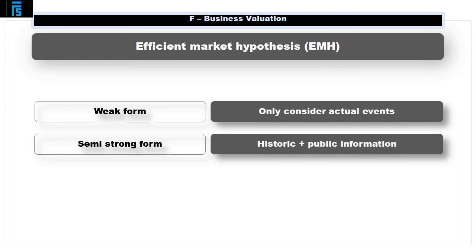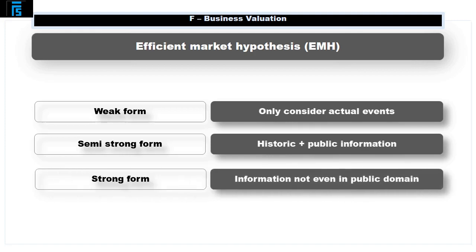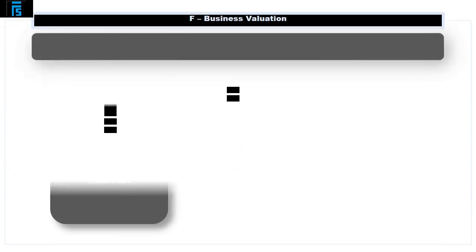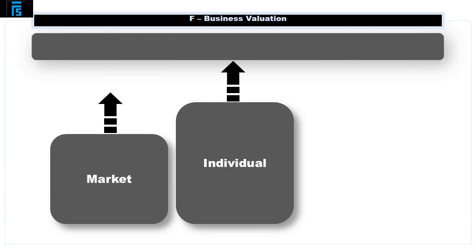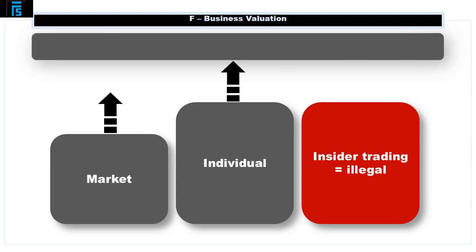A semi-strong form efficient market will include all historic information as described above; however, it will also include all information that is in the public domain. A strong form efficient market will include all of the above; however, in addition it will reflect information not in the public domain, i.e. that held privately by directors. It is difficult to see how this can be achieved in practice. An individual investor can outperform the market if they are able to operate at a higher level of efficiency than the market. Accordingly, a weak form market will be beaten by an investor that operates in a semi-strong way. In the same way, a semi-strong market would be beaten by a strong investor. However, taking advantage of private information — known as insider dealing or insider trading — is illegal.